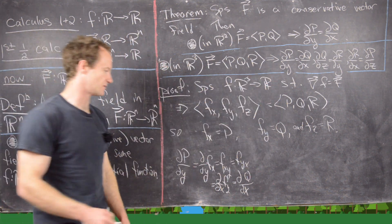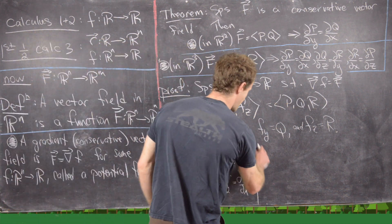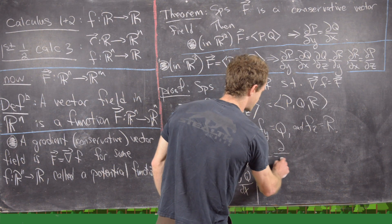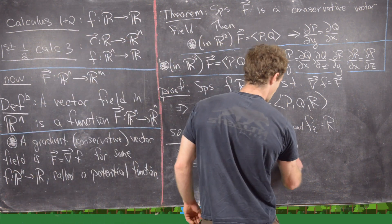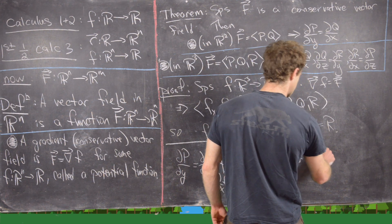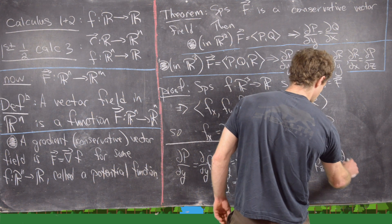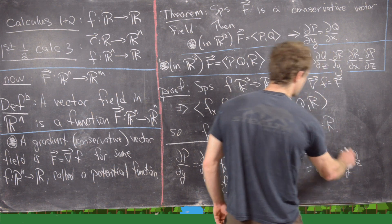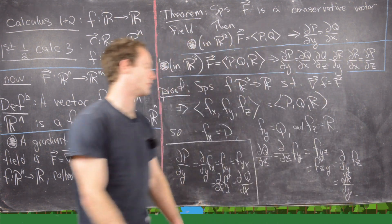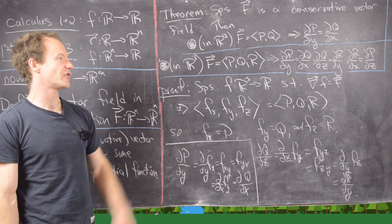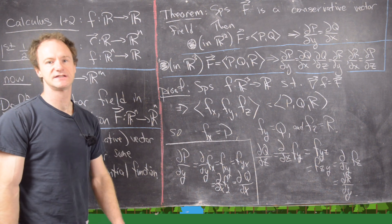Now the second equation: ∂Q/∂z equals the partial with respect to z of f_y (since Q = f_y), which is f_{yz}. Switching order by Clairaut's theorem gives f_{zy}, which is the partial with respect to y of f_z. Since f_z = R, that equals ∂R/∂y — exactly what we need. The third equation follows in a very similar way; I urge you to work out those details. This is a good place to stop the video.